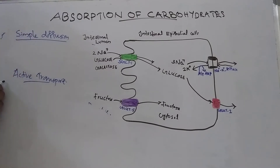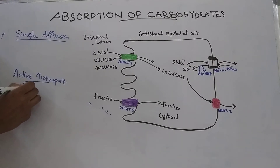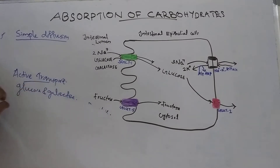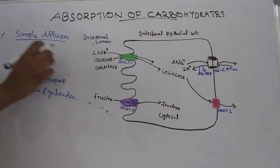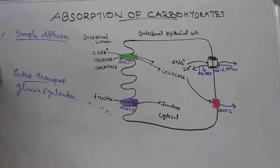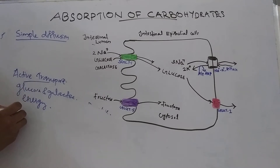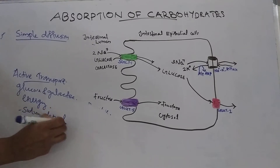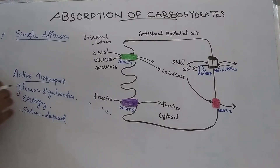The second mechanism is active transport. Glucose and galactose are absorbed very rapidly by active transport. This process requires energy — it is energy dependent and sodium dependent.